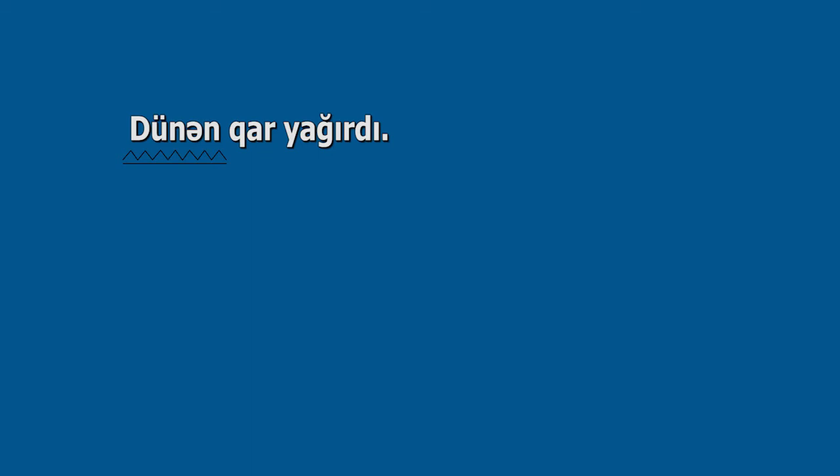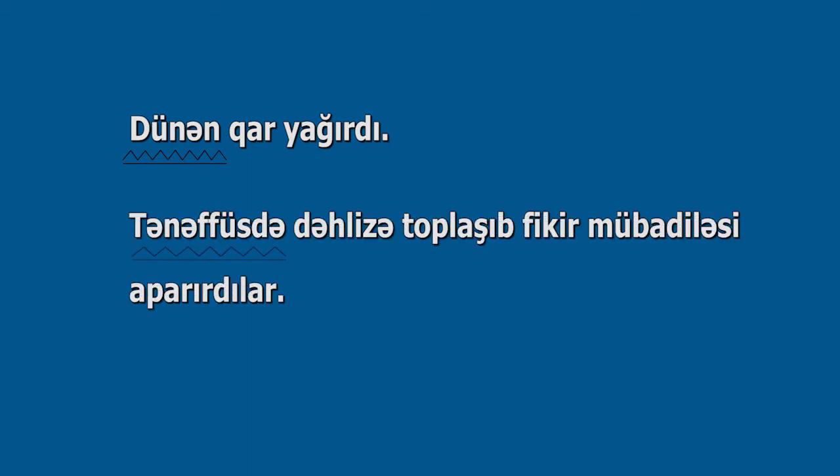Zaman zərfliyi işin, hərəkətin, hadisənin zamanını bildirir. Nə vaxt, nə zaman, haçan, nə vaxta dək suallarından birinə cavab verir. Nümunə: Dünən qar yağırdı. Tənəffüsdə dəhlizə toplaşıb fikir mübadiləsi aparırdılar. Yer zərfliyi işin, hərəkətin, hadisənin yerini bildirir. Hara, harada, haraya, haraya qədər kimi suallarından birinə cavab verir.